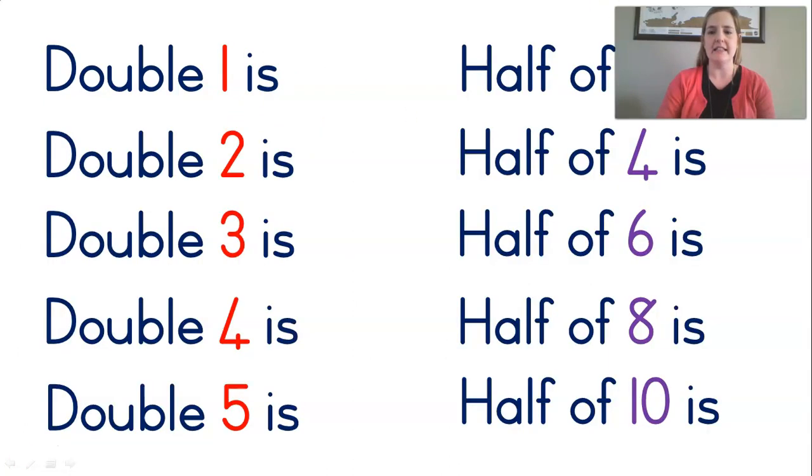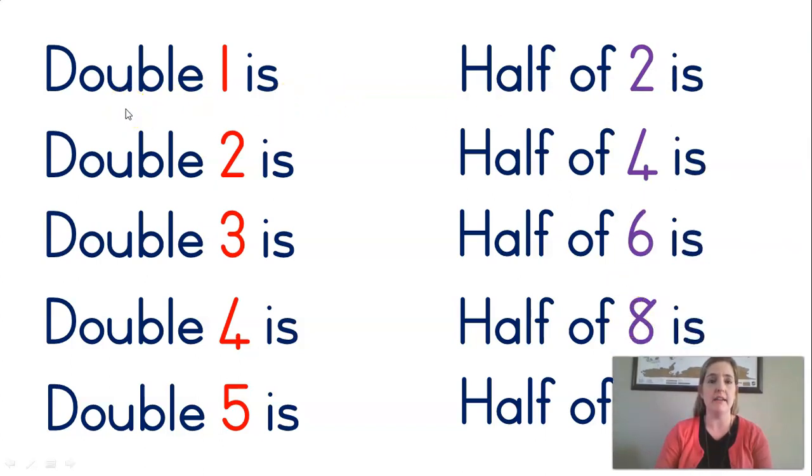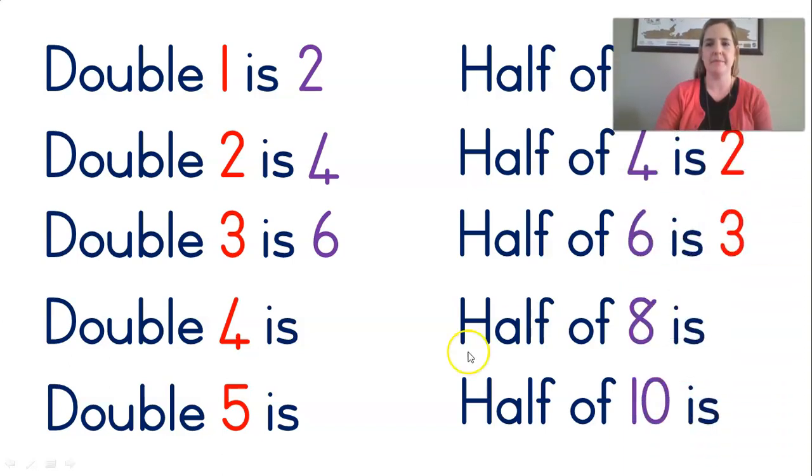And remember, we discussed that there's a little pattern. If you remember this, if you know this can really help you a lot. So, double one is, we say in our heads, one plus one, that's two. Half of two is, if we chop two cupcakes in half, one. And did you notice that pattern again? Double two is four. So, half of four is two. Great. Double three is six. Half of six is three. Very good. Double four is eight. Half of eight is four. Double five is ten. Half of ten is five. Very good.